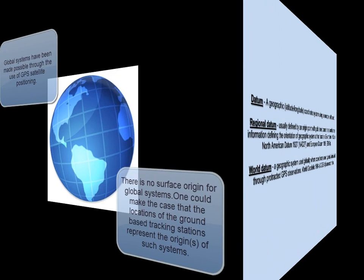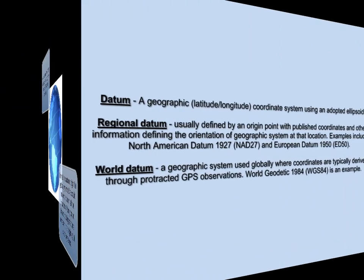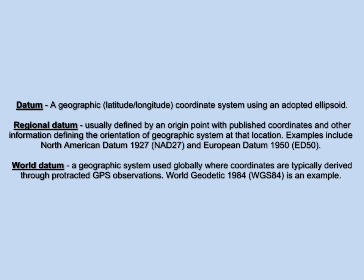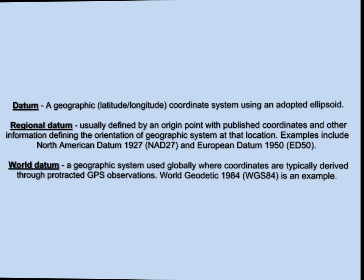So, in summary, datums are geographic coordinate systems using an adopted ellipsoid. Regional datums are defined by an origin point with published coordinates and other information defining its orientation. And world datums are geographic systems used globally where coordinates are typically derived through protracted GPS observations.